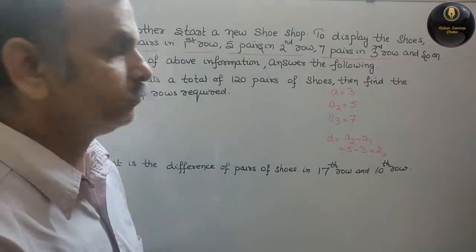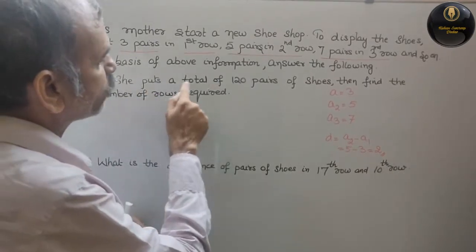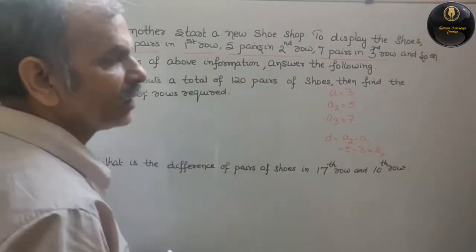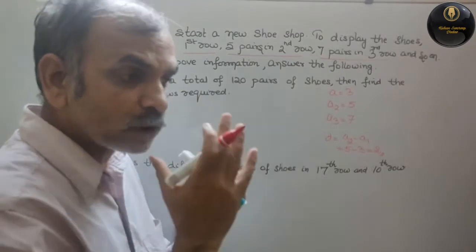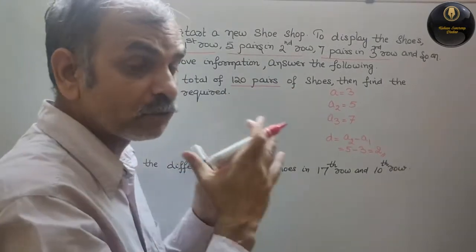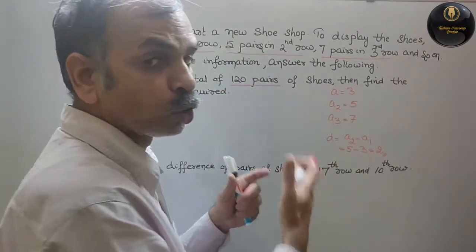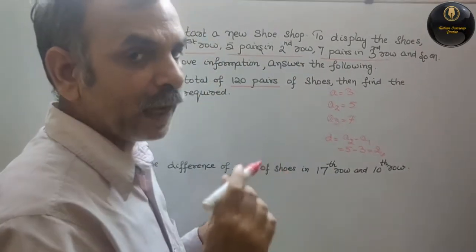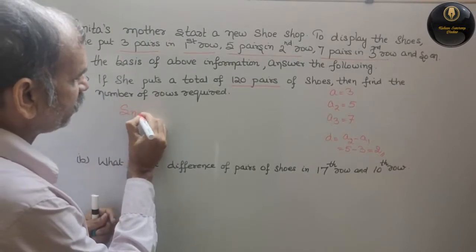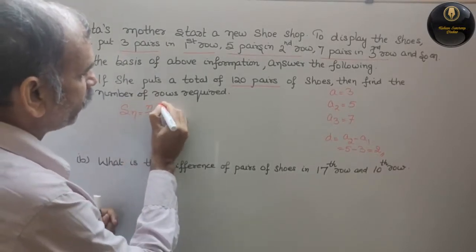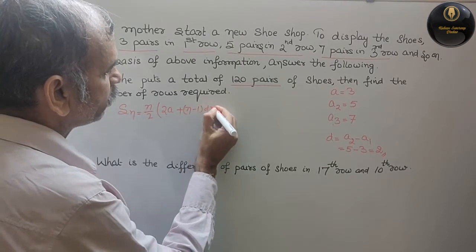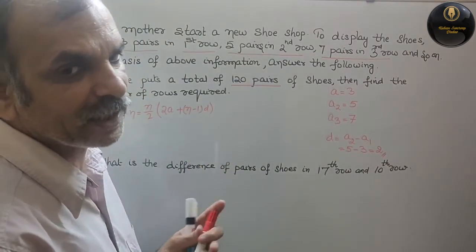Now the question asks: if she puts a total of 120 pairs of shoes, then find the number of rows required. Total is 120, and they are arranged in rows. So we will use the sum formula. That formula is: Sn is equal to n by 2 into 2A plus n minus 1 into D.